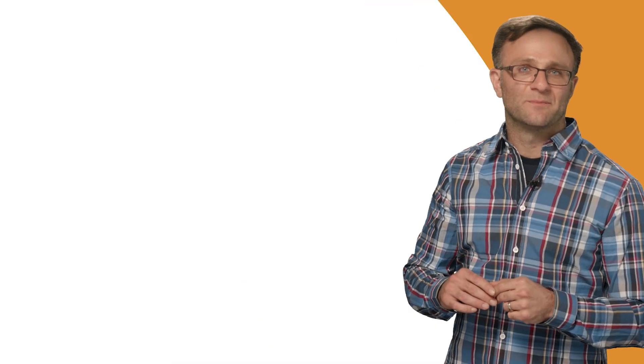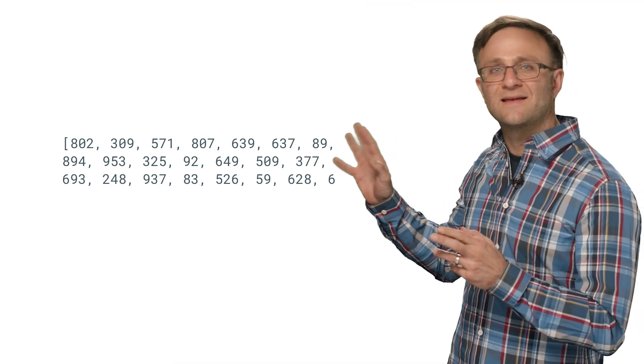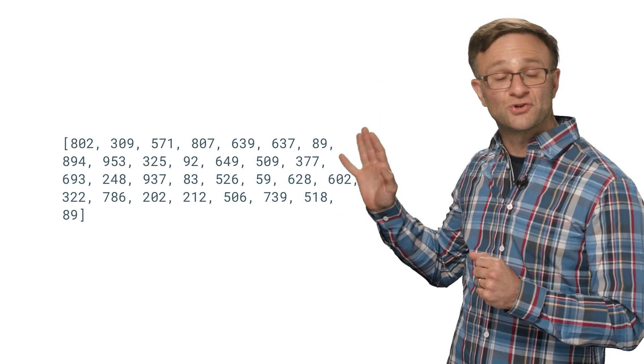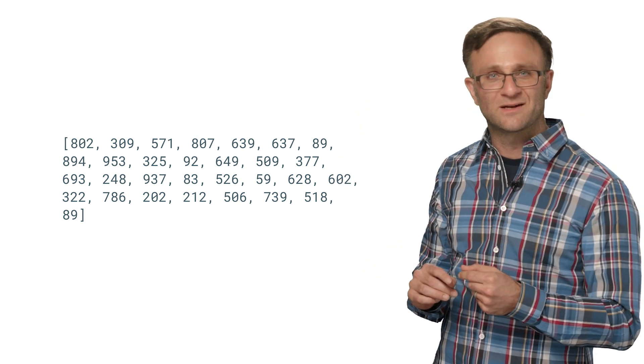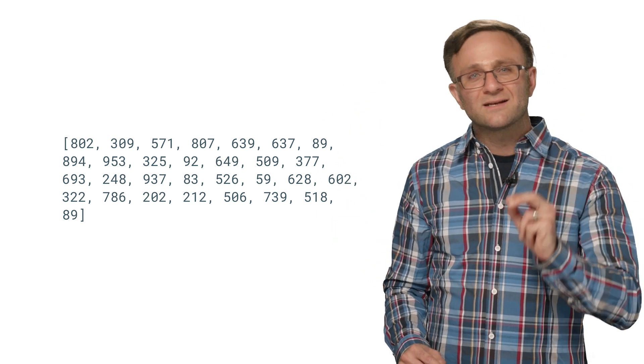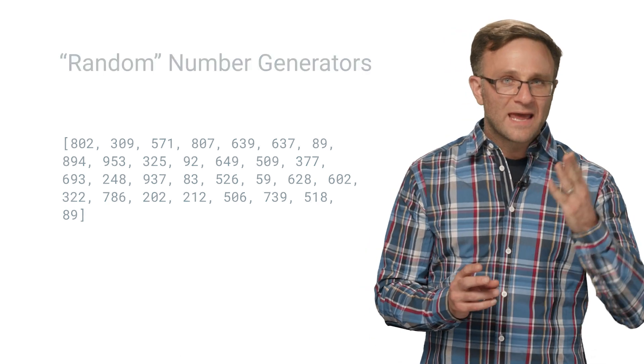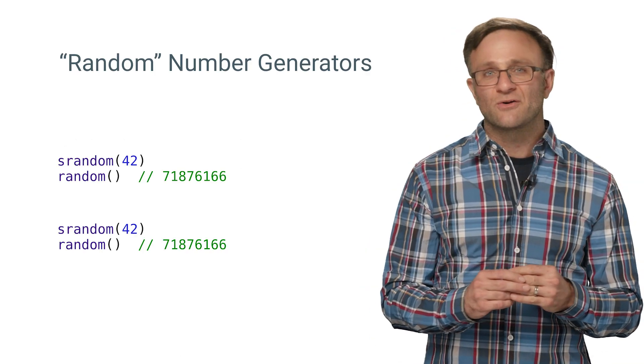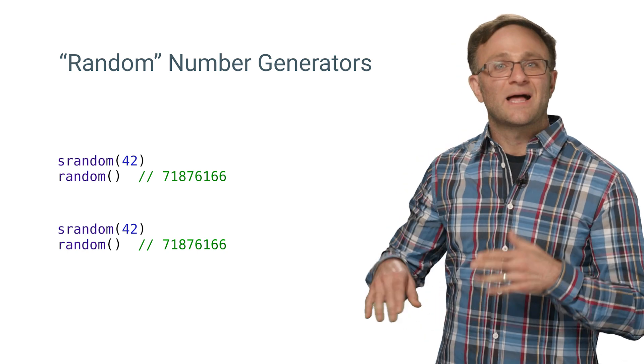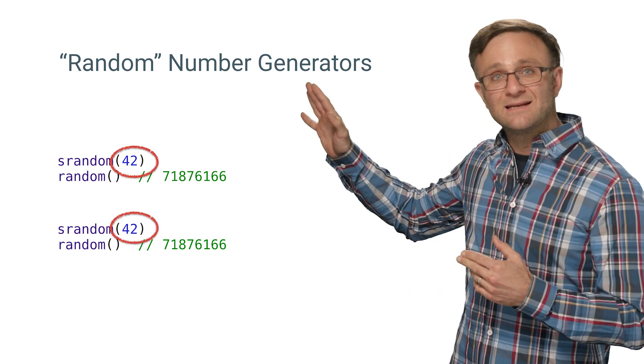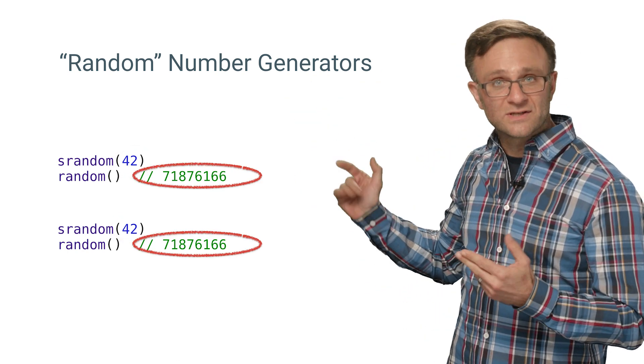So I want you to take a look at this array of numbers here. Imagine that we wanted to send this array of integers from a server to your user's device. Looks like just a bunch of random numbers, right? Well, that word random is actually the key to compressing these in an incredibly efficient manner. As you probably know, a random number generator isn't truly random. Supply a random number generator with the same seed, and you'll get the same results out every time.